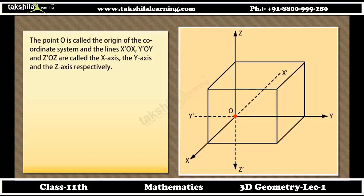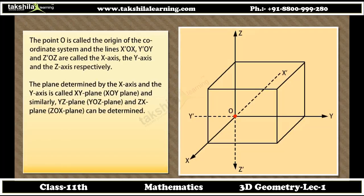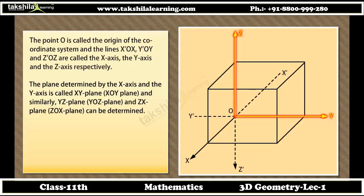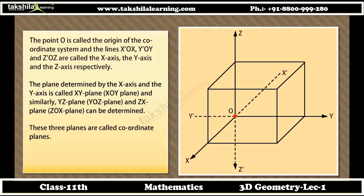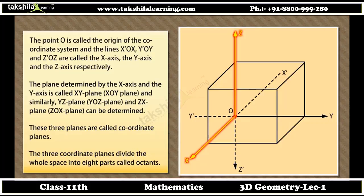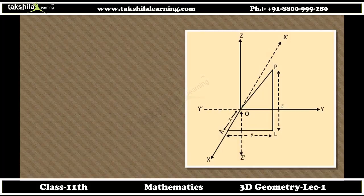The positive direction of the axis is indicated by arrows with thick lines. The plane determined by the X-axis and Y-axis is called the XY-plane, that is, X-O-Y-plane. Similarly, the Y-Z-plane (Y-O-Z-plane) and the Z-X-plane (Z-O-X-plane) can be determined. These three planes are called coordinate planes. The three coordinate planes divide the whole space into eight parts called octants.